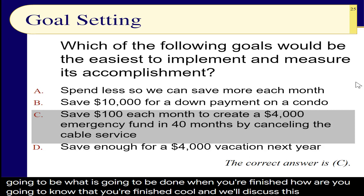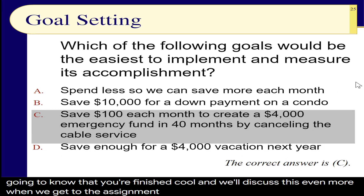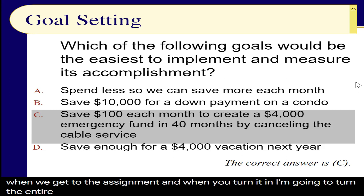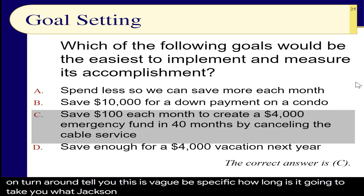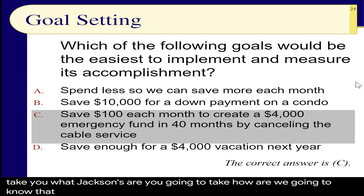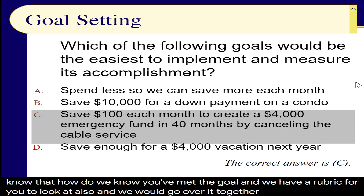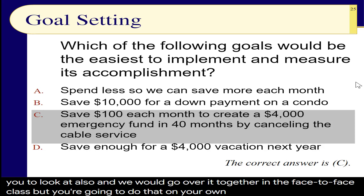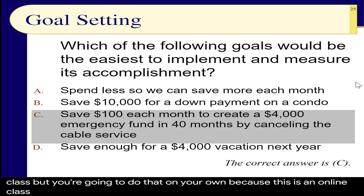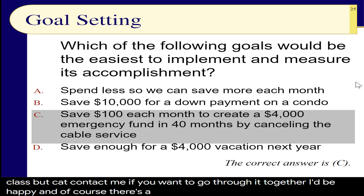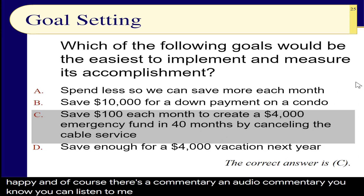When you turn in the assignment, I'm going to tell you if it's vague — be specific. How long is it going to take? What actions are you going to take? How do we know you've met the goal? There's a rubric for you to look at. In the face-to-face class we go over it together, but since this is online, do it on your own — or contact me. If you want to go through it together, I'd be happy. There's also an audio commentary you can listen to. We want you to succeed.